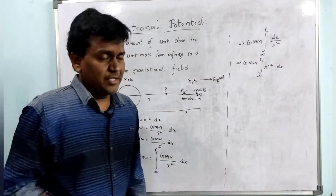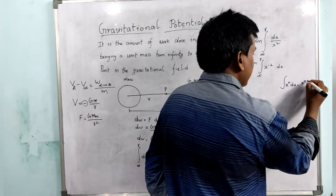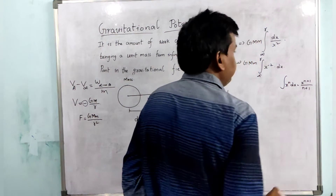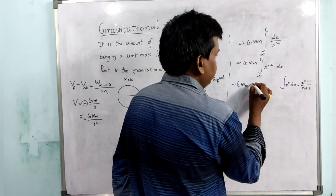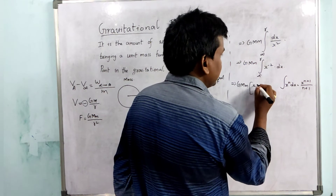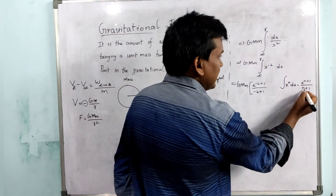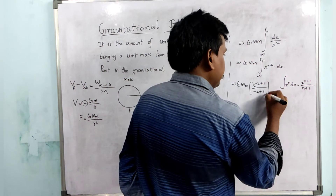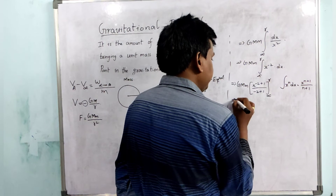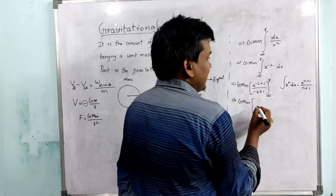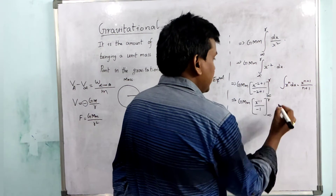Using the integration formula — integral of x to the power n dx equals x to the power n plus 1 by n plus 1 — and applying it here, where n is minus 2, we get: G capital M small m times x to the power minus 2 plus 1 by minus 2 plus 1, evaluated from infinity to R.